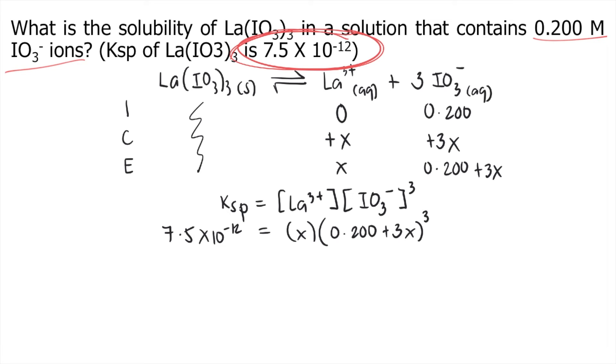That means X is also a very small number. So we can let 3X equal 0. That's how the approximation works.